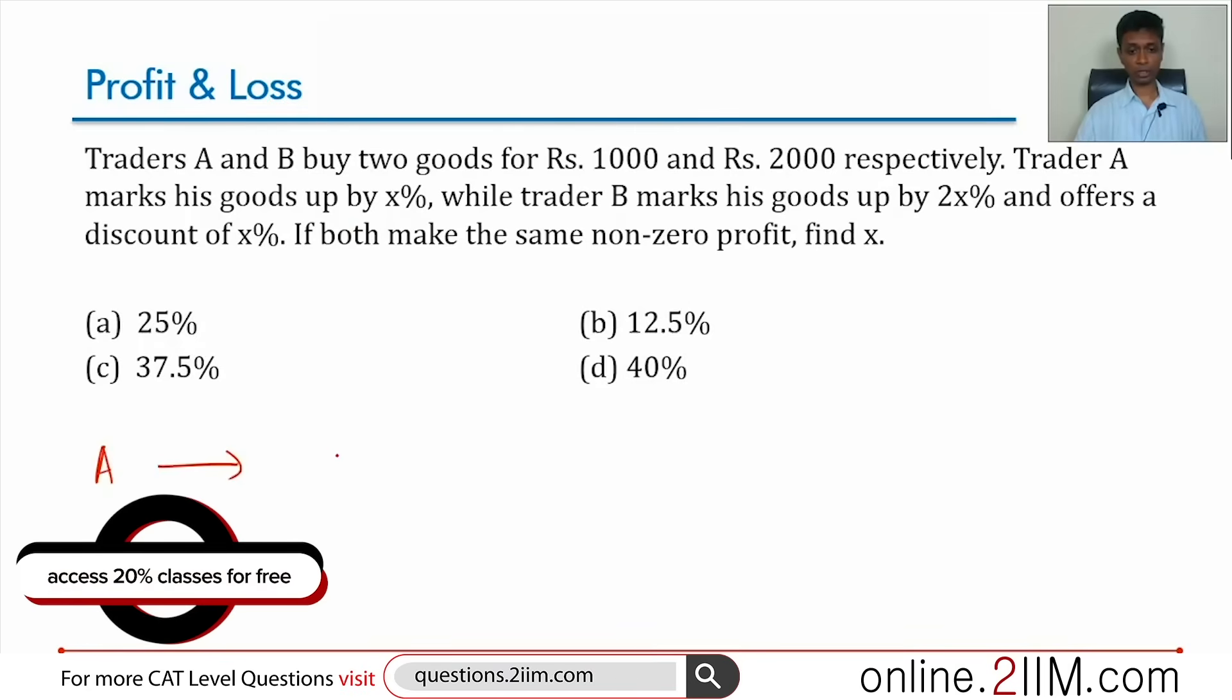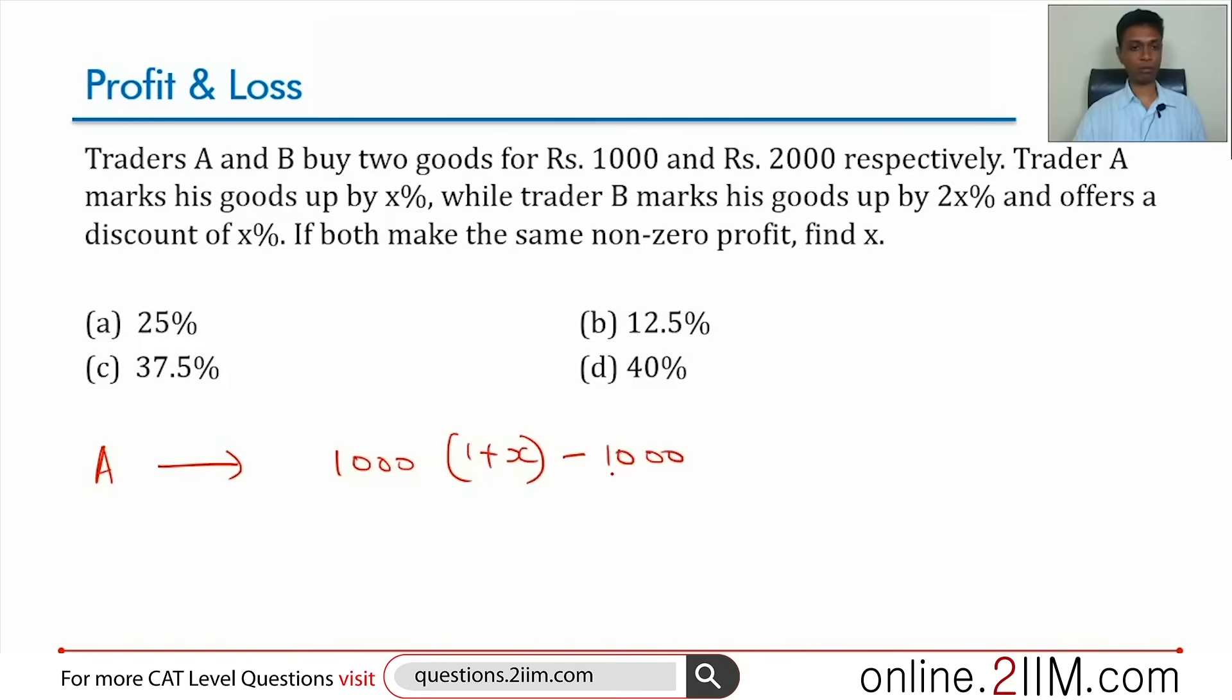Want to find A's profit. A's profit: he buys at 1000, marks it up by X percent, and there's no discount. Cost price is 1000, this is the profit A makes. Now B's profit: he buys at 2000, marks it up by 2X percent, then offers a discount of X percent. Cost price is 2000, this is the profit he'll make.